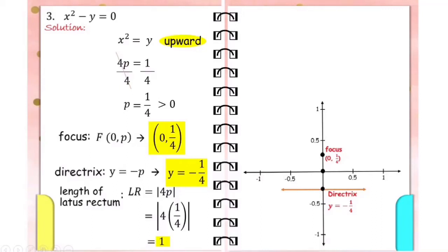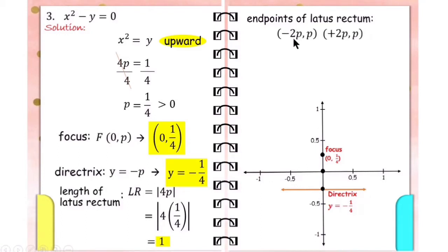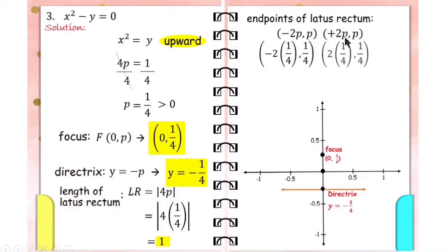To sketch the parabola, we need to identify the endpoints of the latus rectum, which are negative 2p and p, and positive 2p and p. Replace p with 1/4 and simplify. Negative 2 times 1/4 is negative 1/2 (negative 2 times 1 is negative 2, divide by 4 is negative 2 over 4). Finding its lowest term gives negative 1/2. We simply copy 1/4.